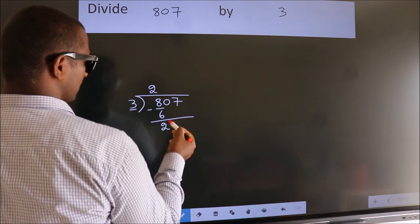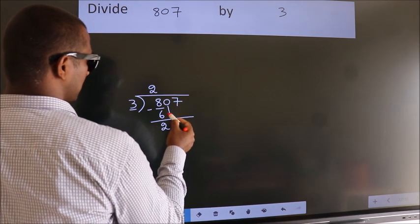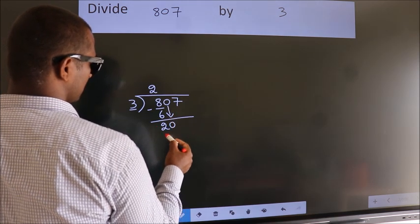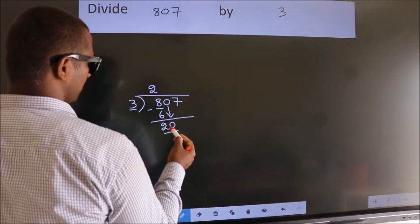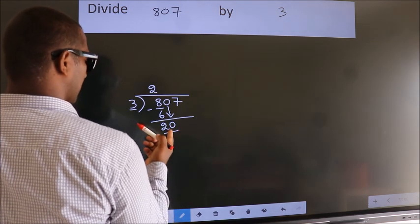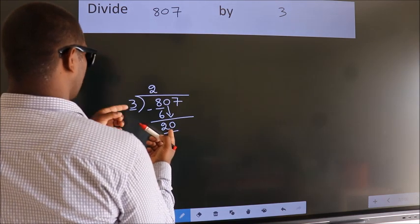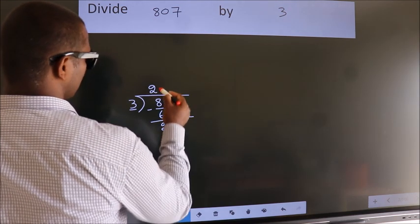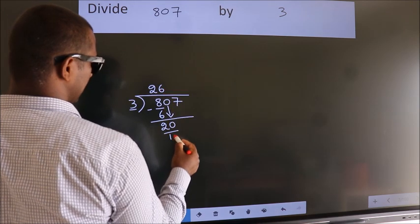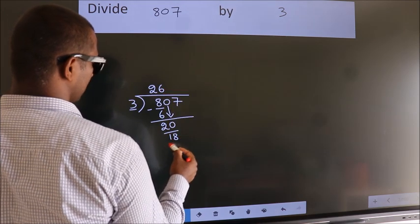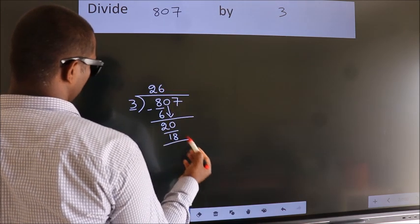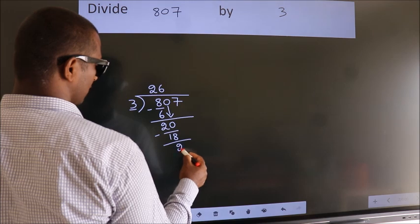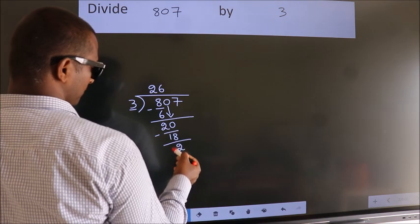After this, bring down the beside number. So, 0 down — so, 20. A number close to 20 in the 3 table is 3 sixes: 18. Now we subtract. We get 2.